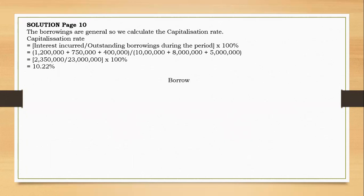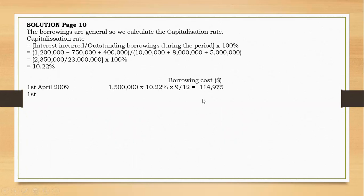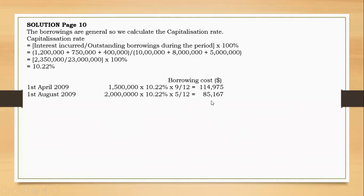So you start with each drawdown date. Borrowing costs in dollars: from 1st April, $1.5 million times 10.22% apportioned for nine months gives $114,975. Then from 1st August, five months: $2 million times 10.22% times 5/12 gives $85,167.